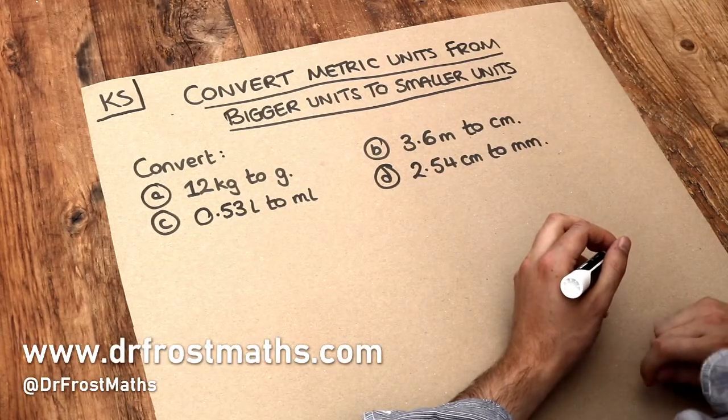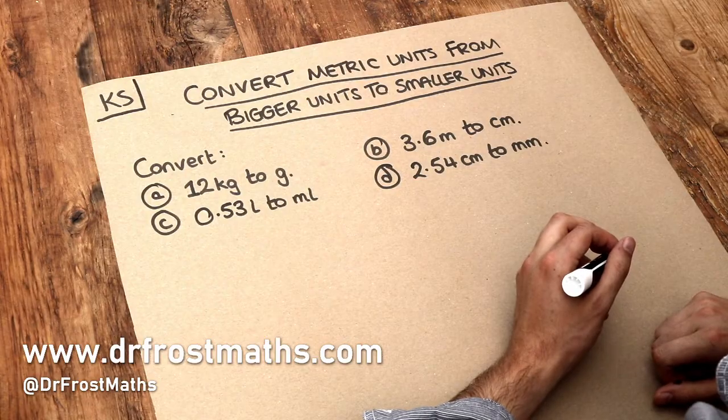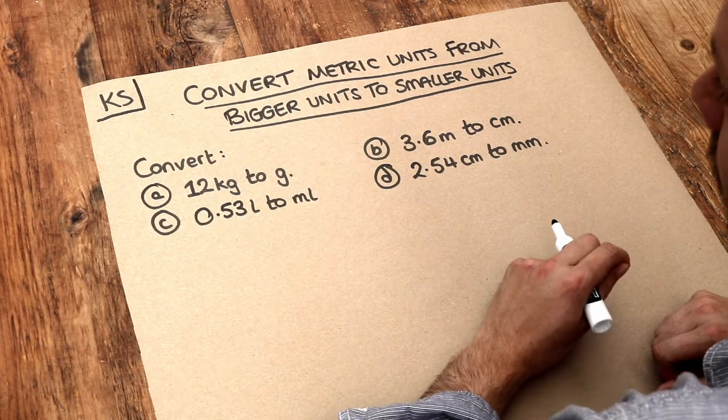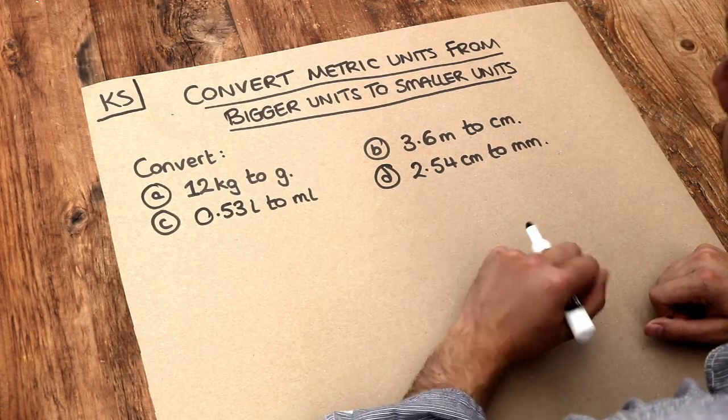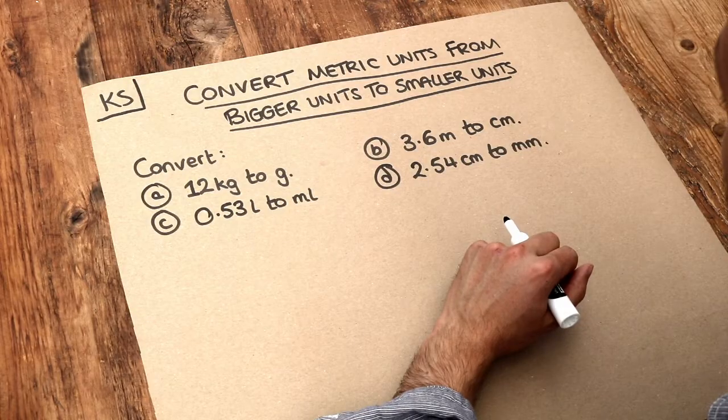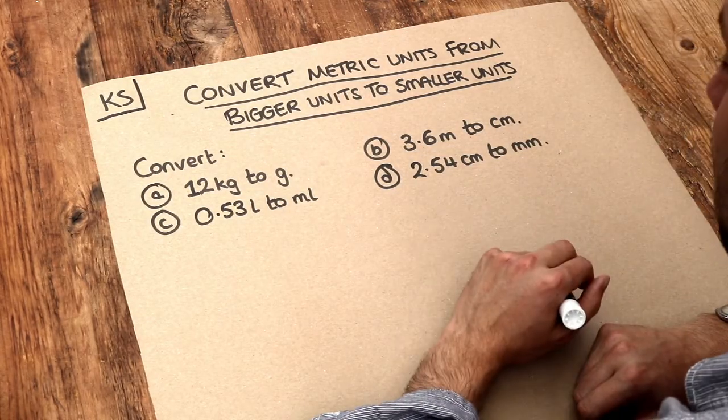Hello and welcome to this Dr. FrostMath's key skill video on converting metric units from bigger units to smaller units. Now we use units in real life, for example for measurement we have centimetres and metres and kilometres for larger distances. If we talk about our weight, we could talk about our weight in grams or kilograms.